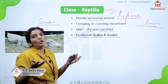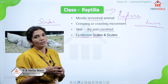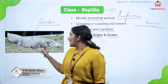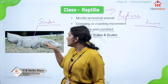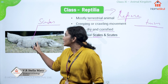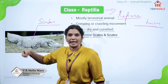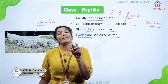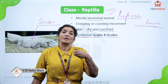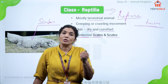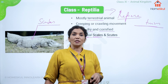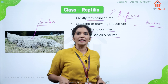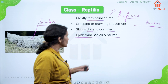If you are not sure what scutes look like, here I have a picture. You can see the hard plates on the alligator — those are scutes. Similarly, the hard covering of the tortoise or turtle that you may have seen is also called scutes.